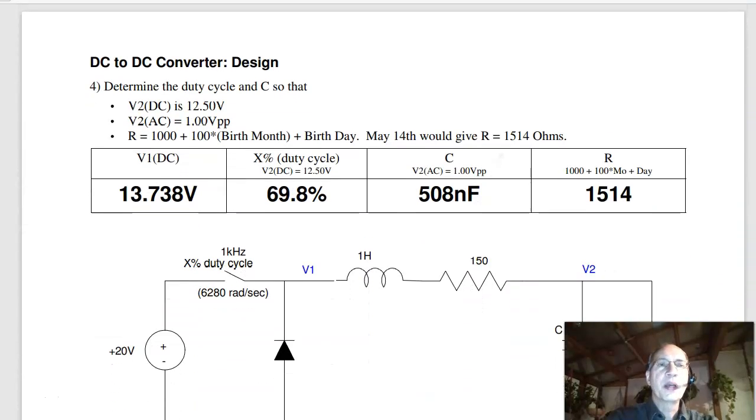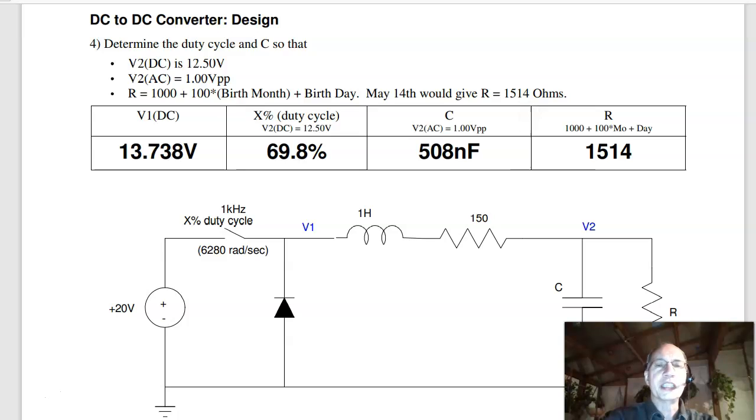So that's the signals V1 and V2. That's analysis. Problem four is design of a DC to DC converter. If I want V2 to be 12.5 volts, with 1 volt peak to peak, this is the DC term, 12 volts. This is the AC term.